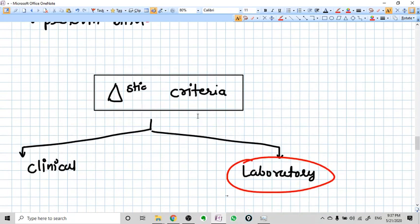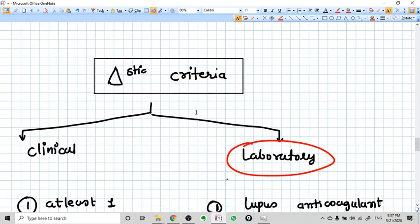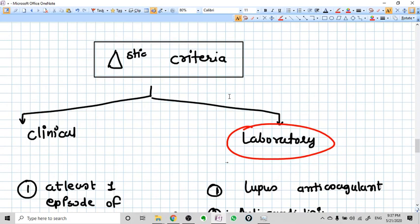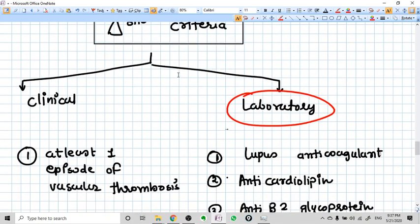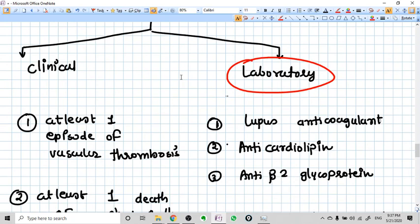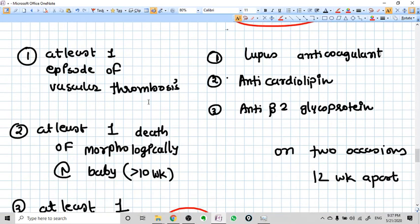In this video now, let's talk about the very important thing. What is the very important thing you should learn? The diagnostic criteria. Two types of diagnostic criteria are there: Clinical criteria and Laboratory criteria. For diagnosis of APLA syndrome, you need at least one clinical criteria and one lab criteria.